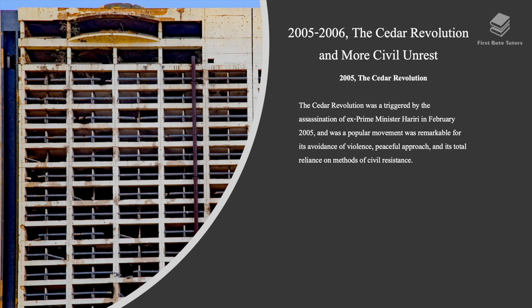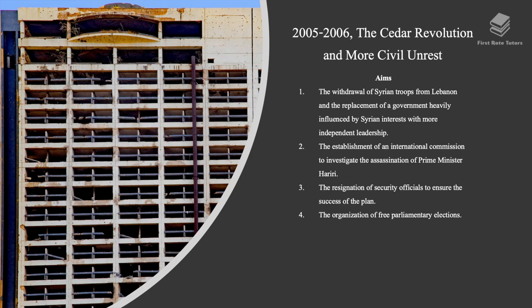The Cedar Revolution was triggered by the assassination of ex-Prime Minister Hariri in February 2005. The popular movement was remarkable for its avoidance of violence, its peaceful approach, and its total reliance on methods of civil resistance. Its aims were the withdrawal of Syrian troops from Lebanon, the replacement of a government heavily influenced by Syrian interests with more independent leadership, the establishment of an international commission to investigate the assassination of Prime Minister Hariri, the resignation of security officials, and the organization of free parliamentary elections.